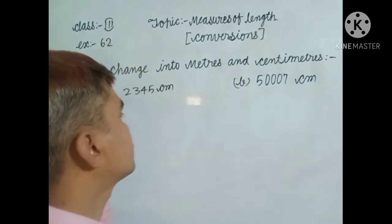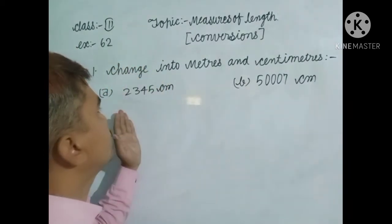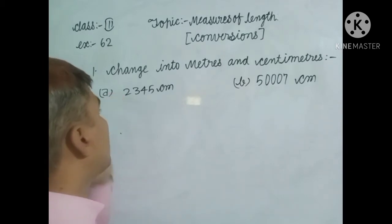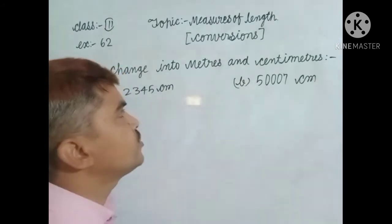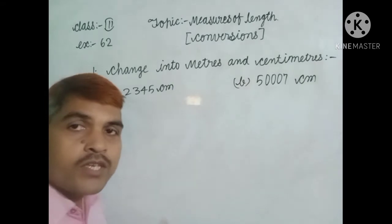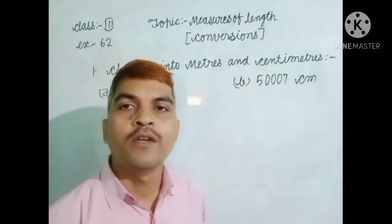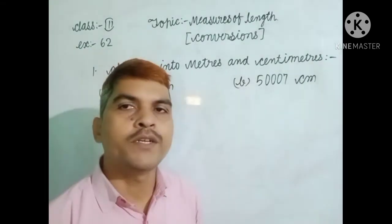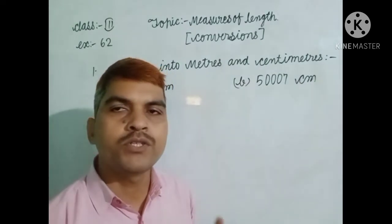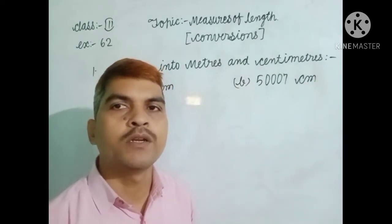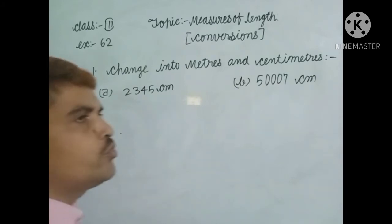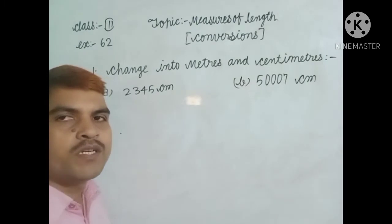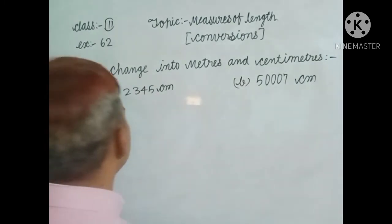We have two questions here, dear students: 2345 centimeters and 50007 centimeters — convert into meters and centimeters. Every student should know that one meter is equal to 100 centimeters. When you divide by 100, you find out the meters and centimeters.